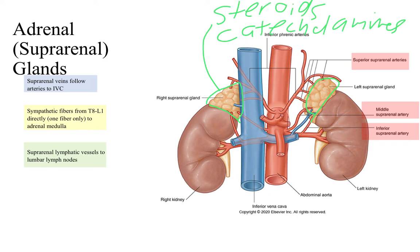Since these are endocrine glands, you want a nice blood supply going to them. The blood supply comes from the superior suprarenal arteries just above the celiac trunk, the middle suprarenal arteries coming out at the level of the superior mesenteric artery, and then the inferior suprarenal artery, which branches off of the left and right renal arteries. The adrenal veins follow the arteries to the inferior vena cava, which sits slightly to the right of the aorta running centrally.